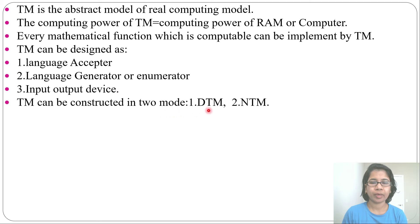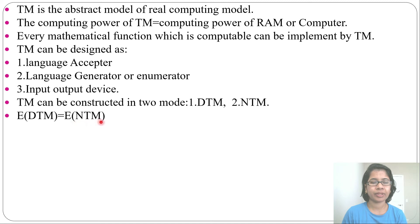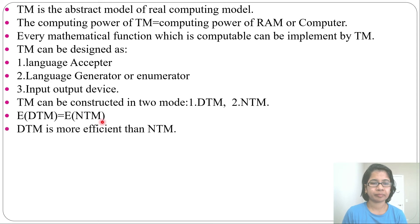A Turing machine can be constructed in two models: deterministic Turing machine and non-deterministic Turing machine. The expressive power of both DTM and NTM are equal — both can accept the same language. In the case of PDA, the expressive power of NPDA and DPDA was different, but here they are equal. In the case of finite automata, DFA and NFA have the same expressive power, and similarly DTM and NTM have the same expressive power.